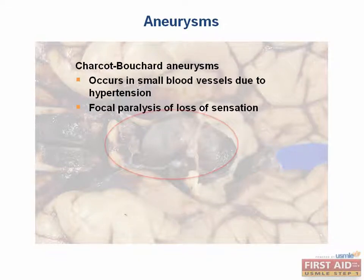Charcot-Bouchard microaneurysms are another type of aneurysm occurring in the lenticulostriate arteries to the basal ganglia and thalamus. When these aneurysms rupture due to chronic hypertension, a hemorrhagic stroke ensues.